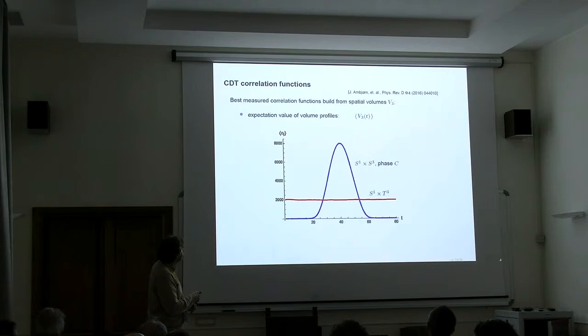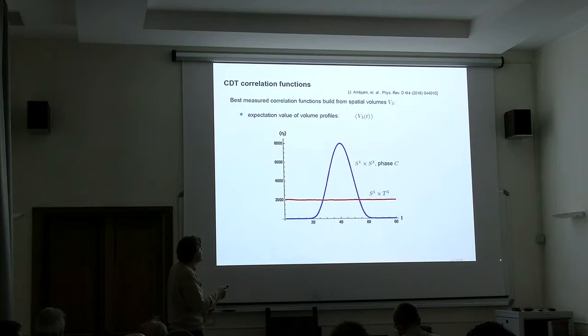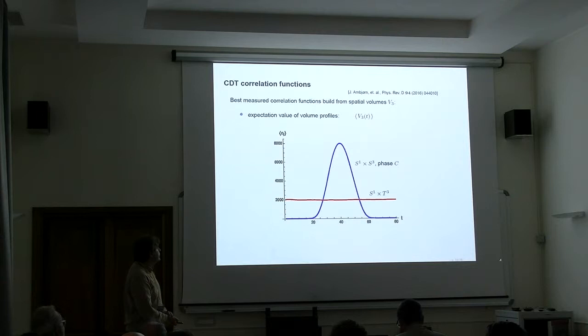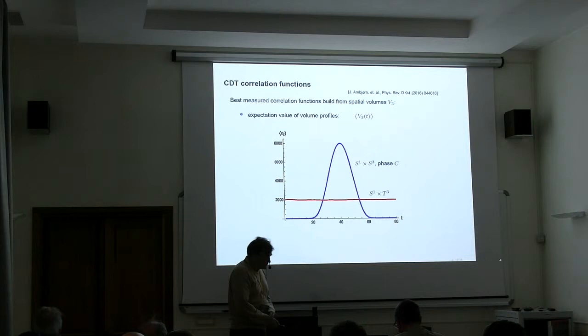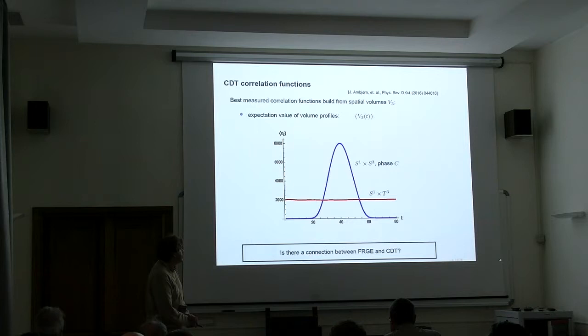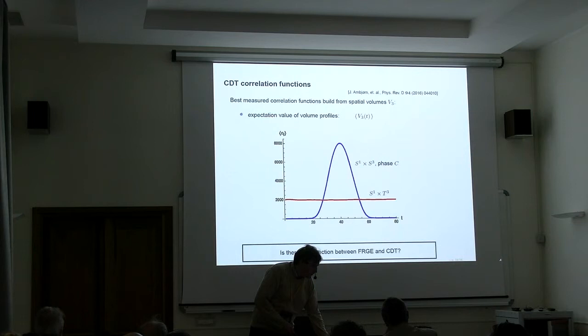They also provided some data. They can measure their geometries, and here they have profile functions, volume in a spatial slice. Then you see if you do a simulation restricting the background to be of the topology of a sphere S3. This corresponds to time times the closed three-sphere. Then you get a nice Gaussian curve. This tells you that your geometry is essentially a four-sphere. They also did simulations with this background, and you see you also get a classical geometry from this one. Now the question is, can we get this also from the phase diagram that we constructed from the RG flow?